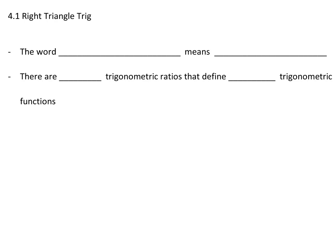Right angle trig. The word trigonometry means triangle measure. Today we're going to focus on right angle triangles. There are six trigonometric ratios that define six different trigonometric functions.